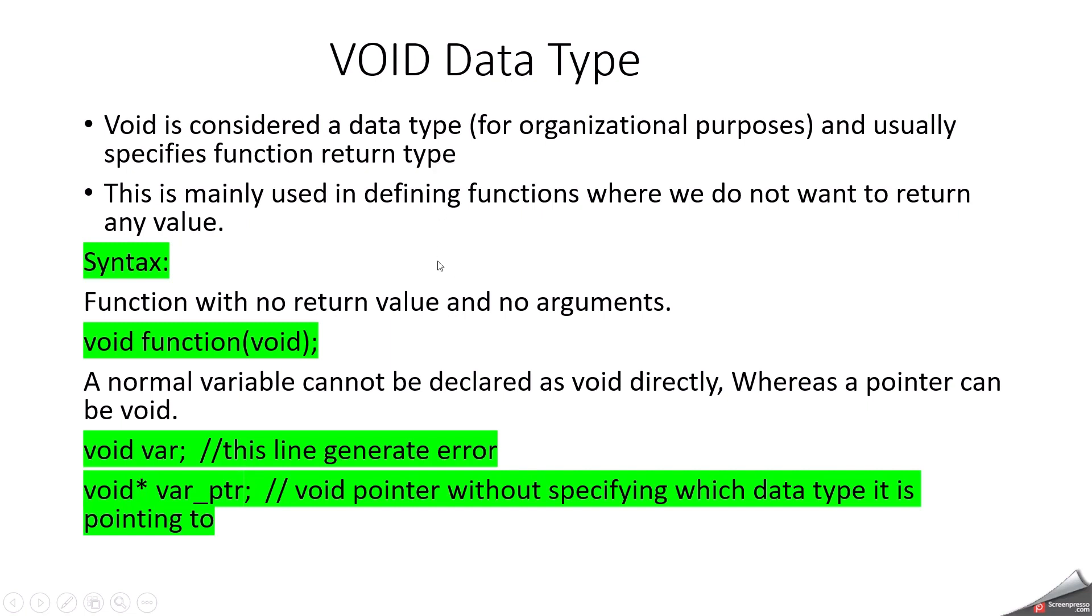Next is void data type. Void is considered a data type for organizational purposes and usually specifies function return type. Why we are considering void as also a data type? Because when you are going to declare a function you need to keep a data type. For example integer your function name or character your function name or unsigned integer function name. At the same time we can use void with no return value. This syntax is saying when you are mentioning a void here, no return value, at the same time we are mentioning here as well there was no arguments. If you don't want to return any value then you can select void. But this will be used only in two places. One is with function. Second one is you can use for declaring a pointer variable. When you are declaring with a normal variable this line will generate an error. This is not allowed according to the C programming language.